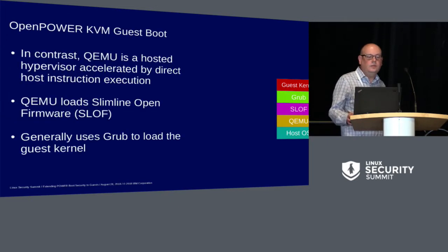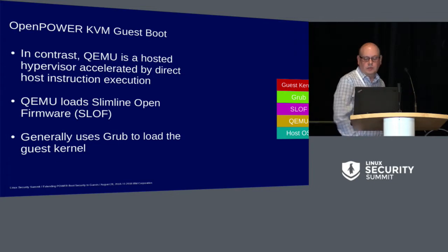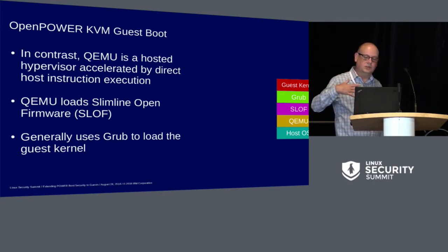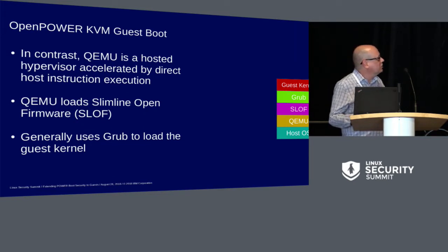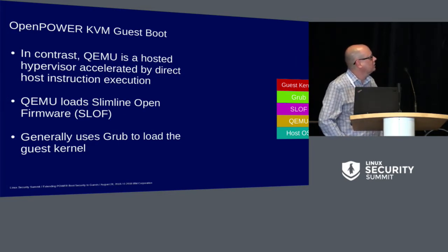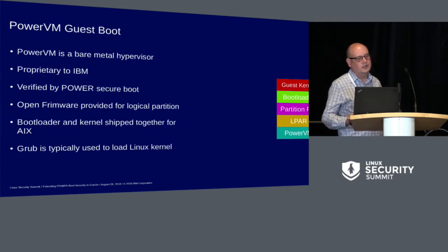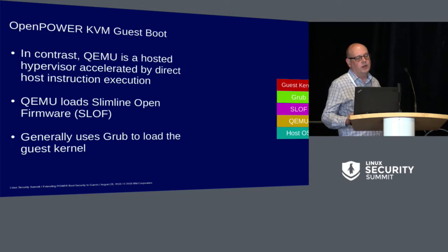For KVM, there's a different firmware component — we don't have partition firmware. We have a Linux host, QEMU, and slimline open firmware, which is a smaller version of partition firmware that provides hypercalls and largely the same things that partition firmware provides on PowerVM. Generally we use Grub to load the guest kernel. So we have these two different environments: one provided by PowerVM and one provided by KVM running on OpenPower — two different hypervisors, two different firmware stacks.